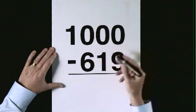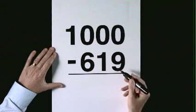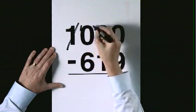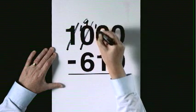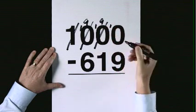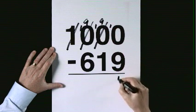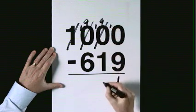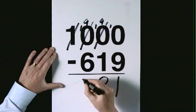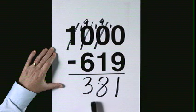1,000 subtract 619. Exchange. Exchange. Exchange. 10 take 9 is 1. 9 take 1 is 8. 9 take 6 is 3. The answer is 381.